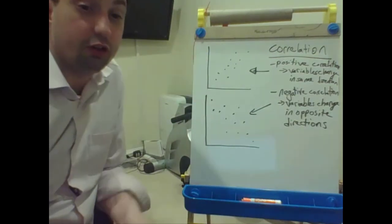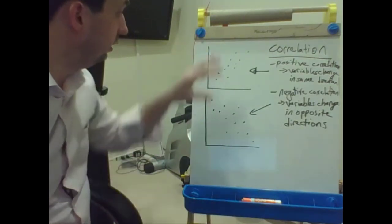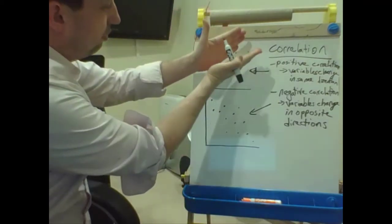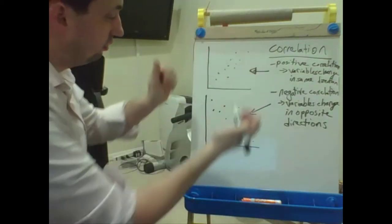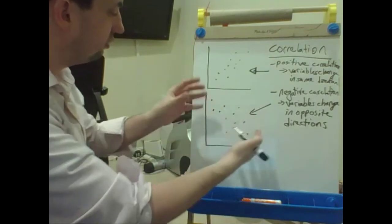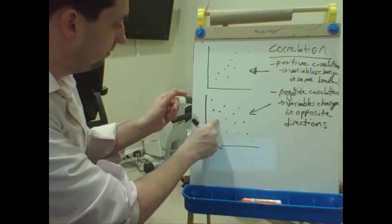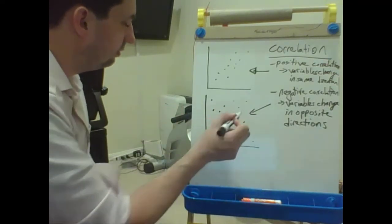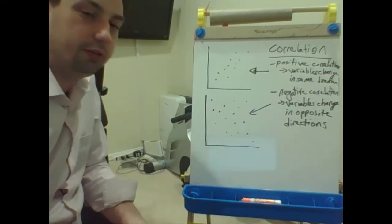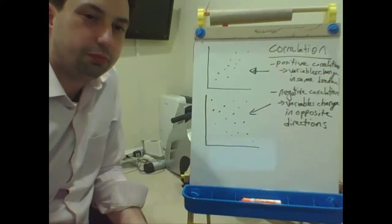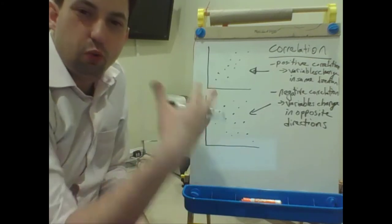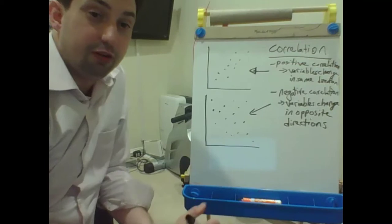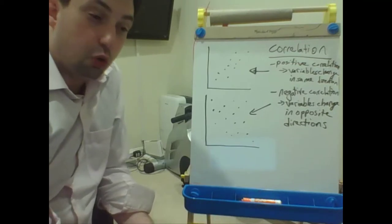There's also a certain level of strength to a correlation. One scatter plot seems pretty strongly correlated — it forms a pretty tight cluster with not a lot of noise. Another is a lot noisier — a weaker correlation, with values sort of all over the map. How strong or how weak a correlation is, is measured by something called the correlation coefficient.